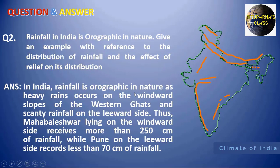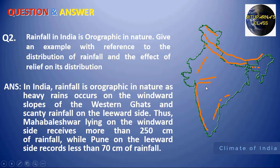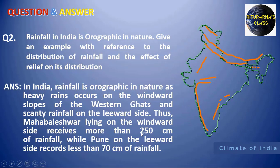Next question: rainfall in India is orographic in nature — give an example with reference. The example here is the Western Ghats. The western coastal plain gets a high amount of rainfall because the rain-bearing wind comes from the Arabian Sea and cannot cross the barrier. That's why the western coastal plain, the windward side of the Western Ghats, gets heavy rainfall. Mahabaleshwar gets approximately 250 cm, whereas Pune, on the leeward side, records less than 70 cm.